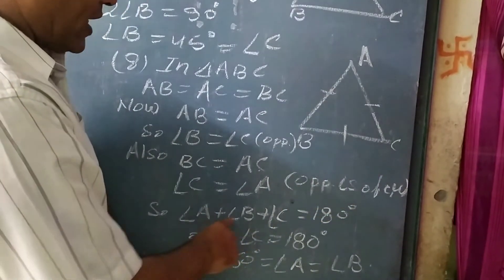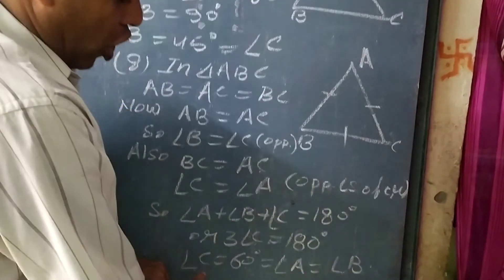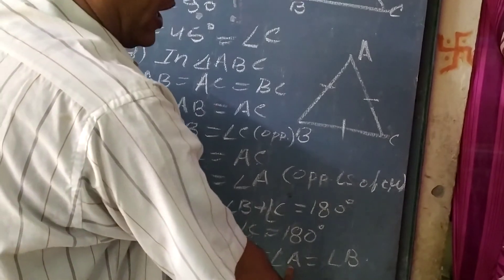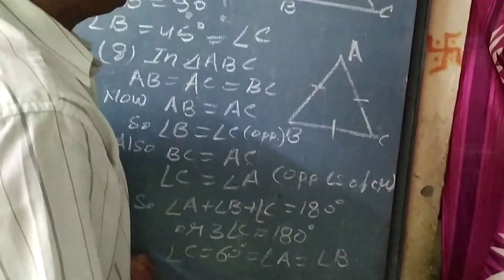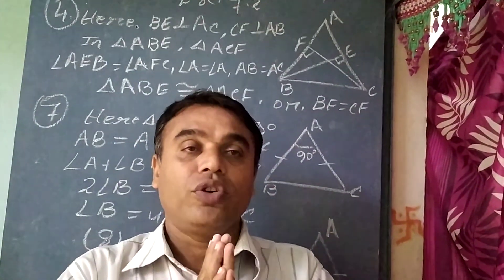Now angle A plus angle B plus angle C equal to 180 degrees, or 3 angle A equal to 180 degrees, or angle A equal to 60 degrees. That is equal to angle B and angle A equal to angle B. So in this way we have solved that exercise 7.2. Thank you, today's class is over.